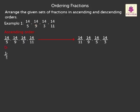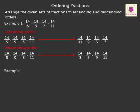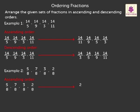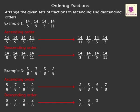Denominators arranged in ascending order give the fractions in descending order as: 14 upon 3, 14 upon 5, 14 upon 9, and 14 upon 11. Example 2: here the denominators are the same, so on arranging the numerators we get ascending order as: 2 upon 8, 3 upon 8, 5 upon 8, 7 upon 8; and descending order as: 7 upon 8, 5 upon 8, 3 upon 8, 2 upon 8.